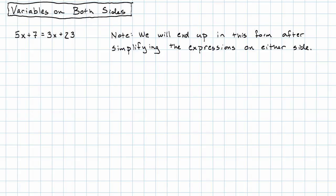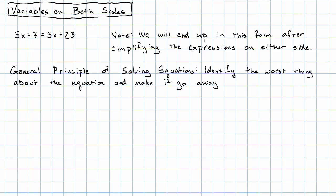So what should we do with this? Well, in order to solve this equation, we're going to take a moment and identify the general principle of solving equations. As we continue and learn how to solve more complicated sorts of equations, the general principle that will follow is to identify the worst thing about the equation and make that thing go away. So in this equation, the worst thing is that it has variable terms on both sides. Our first step, then, is to make one of those variable terms go away.